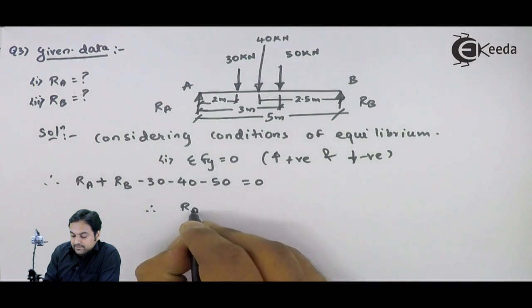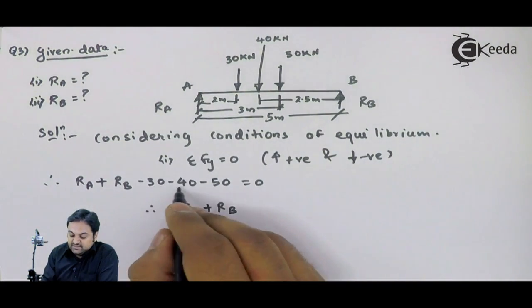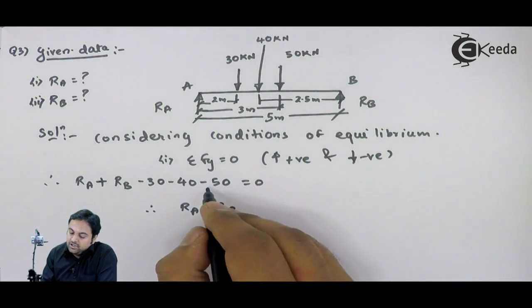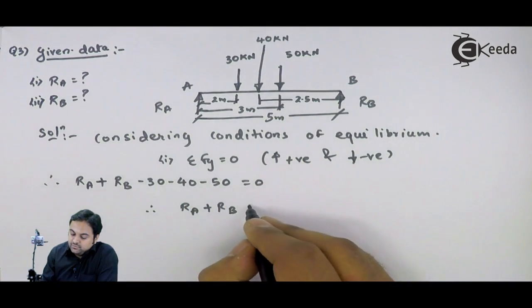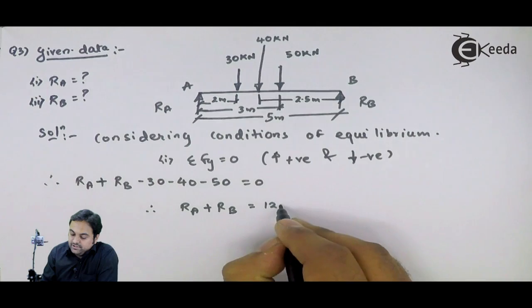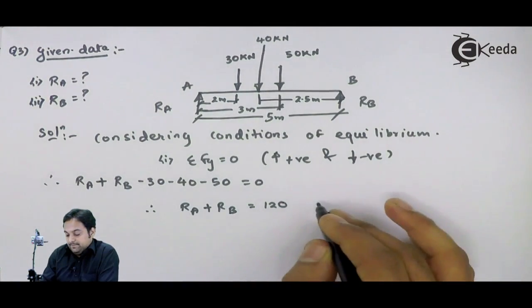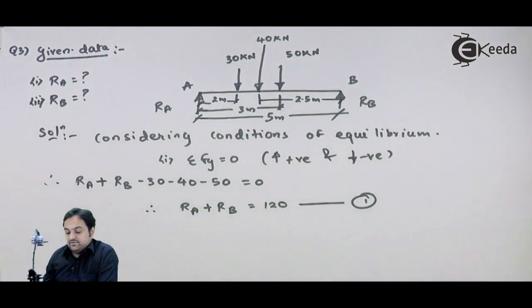Therefore, RA plus RB. This is minus 70 minus 50 which comes out to be minus 120. If I shift it to the other side, that becomes plus 120. I will give this as my first equation.